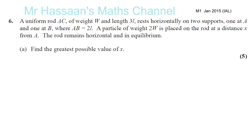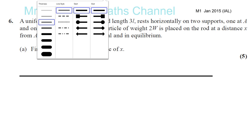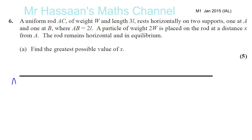Uniform rod AC of weight W and length 3L rests horizontally on two supports, one at A and one at B, where AB equals 2L. So first of all, let's just draw the rod from A to B.